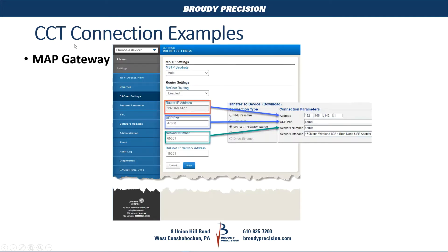For a MAP gateway example: in the MAP gateway, under the BACnet settings, you'll find your MAP's IP address, the UDP port, and your network number. Those are the fields you'll take and use in CCT. As you can see, these are the values. There is a button that says MAP gateway — you can click that and it automatically fills in that information. Then your network interface, since this is Wi-Fi, would be your Wi-Fi connection.